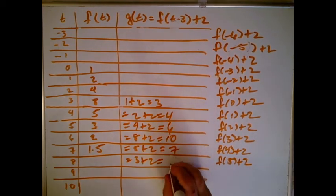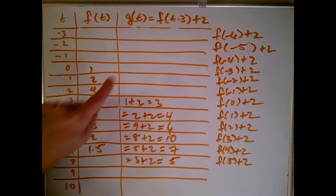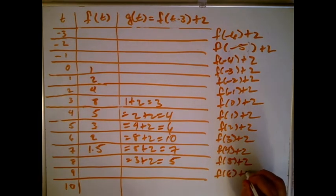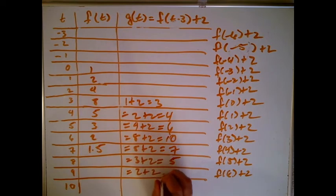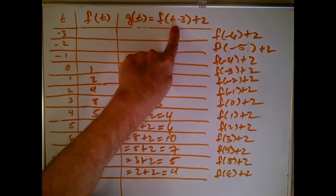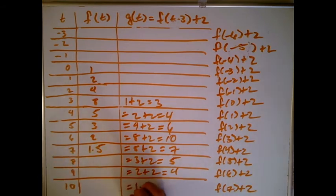3 + 2 = 5 — sorry about the arithmetic. Then t = 9 gives f(6) + 2. f(6) = 2, so that's 2 + 2 = 4. For t = 10, I get f(7) + 2. f(7) = 1.5, so 1.5 + 2 = 3.5.